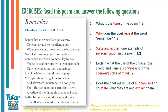Question one: What is the tone of the poem? (3 marks). Question two: Why does the poet repeat the word 'Remember'? (2 marks). Question three: State and explain one example of personification in the poem. (2 marks). Question four: Explain what the use of the phrase 'the silent land' in line two conveys about the speaker's state of mind. (2 marks). Question five: Does the poet make use of euphemisms? If so, state what they are and explain them. (3 marks).